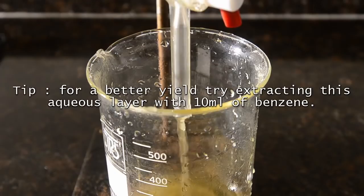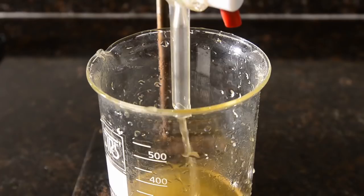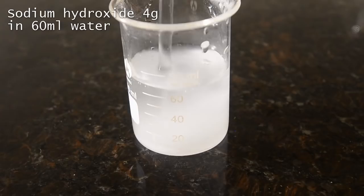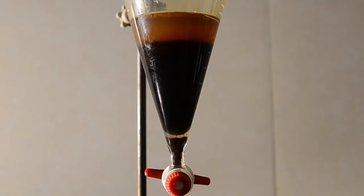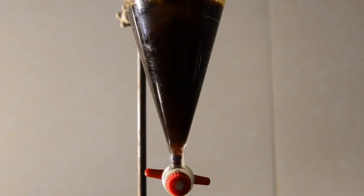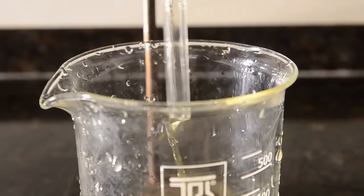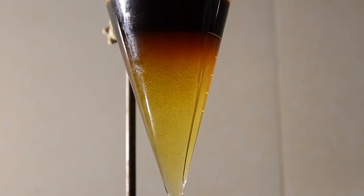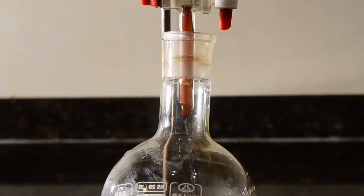Now make up a solution of 4 grams of sodium hydroxide in about 60 ml of water. Add this to the funnel and give the mixture a shake in order to remove any toxic residual bromoacetone. Let the layers separate and then remove the bottom aqueous sodium hydroxide layer. The organic layer should now be free of lachrymatory effects.